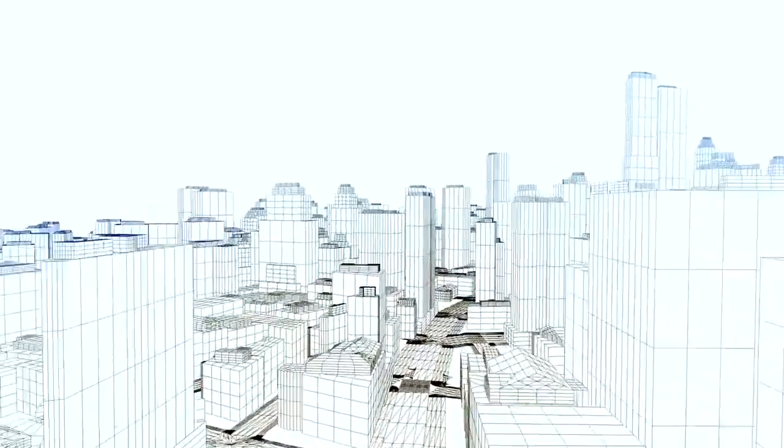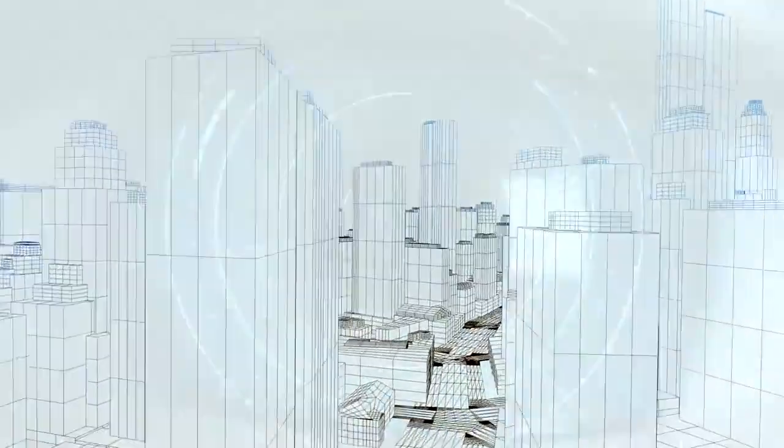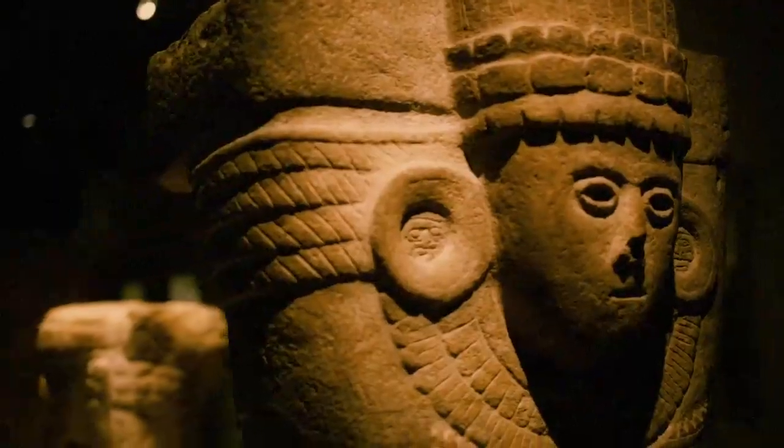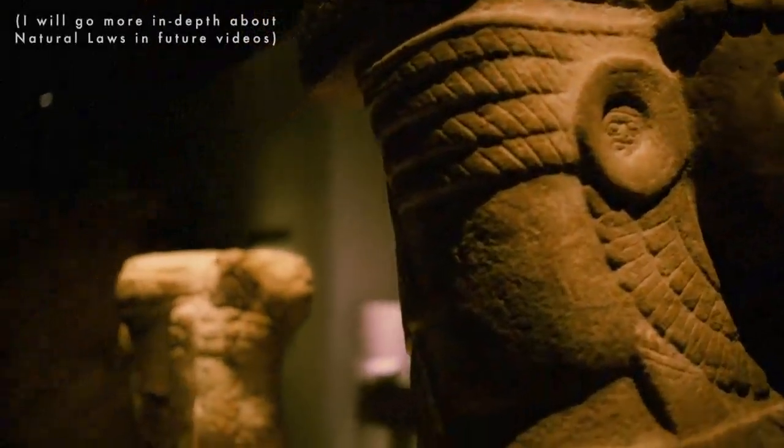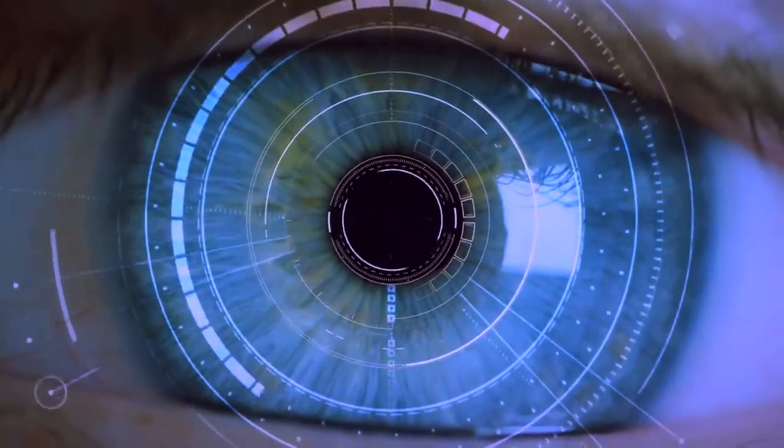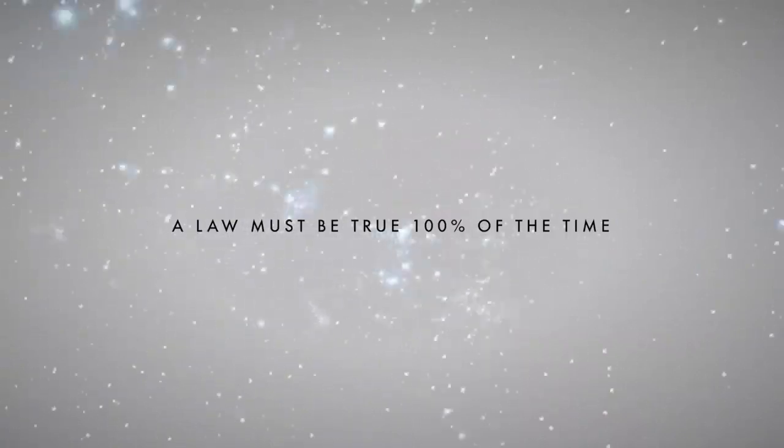So even though God and his intentions cannot be known by humankind, what can be known are the natural laws that construct this very existence. And these natural laws are universal and immutable, meaning that they have always been true and will always remain true, whether your perceptions align with it or not. So do not mistake natural law for religious doctrine. If they're not true 100% of the time, then it's not a law.